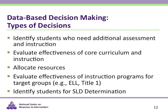So what types of decisions can data inform? We can identify students who need additional assessment and instruction. We can evaluate the effectiveness of the core curriculum and instruction — is the core effective for most students? We can make decisions about allocating resources. We can evaluate the effectiveness of instructional programs for target groups and look at differences among target groups, for example between English language learners and Title I students. And we can inform disability identification — how do we know if a student should be referred and is eligible for disability identification?